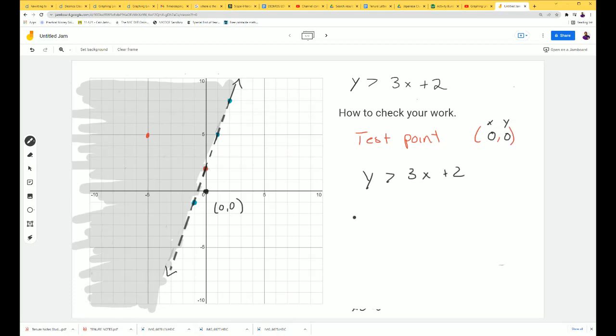Our y is 0 is greater than 3 times our x is 0, plus 2. 0 is greater than 3 times 0 is 0, plus 2. And 0 plus 2 is 2. Is 0 greater than 2? We know this is false. So this is another way to check.